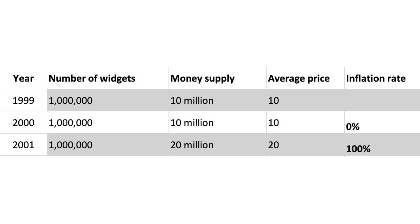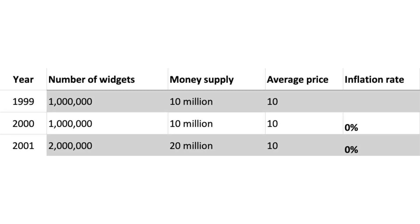And this will give us an inflation rate of 100%. Now if we look at another example, in 2001, we get an increase in the money supply from £10 million to £20 million, but at the same time the output of the economy doubles — the number of widgets goes from 1 million to 2 million. So here, people have more cash, more money, but at the same time output has increased. So although we want to buy more goods, there are more goods available to be bought, so the prices stay the same.